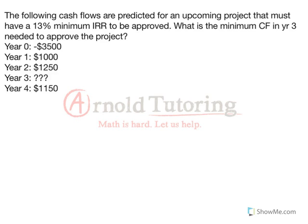We have a set of predicted cash flows, but we don't know what's going to happen in year 3. Investors are basically telling us that we can go ahead with the project if we're going to get at least a 13% IRR, internal rate of return, on the project. Keep in mind that as soon as we hear IRR, that means that at that rate — so 13% in this case — NPV equals 0.